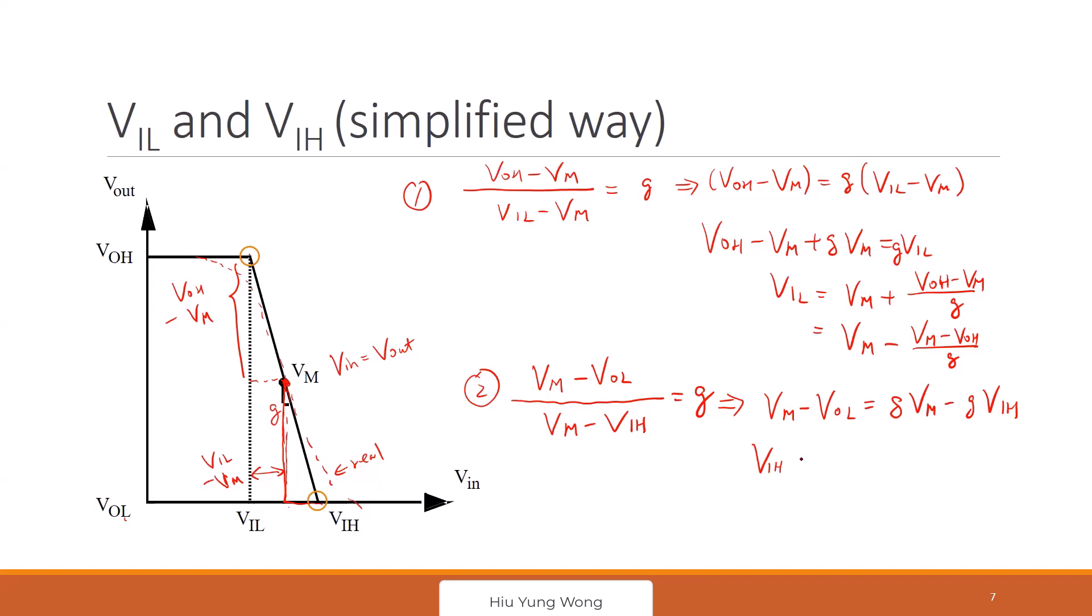So what is VIH? VIH is just multiply G denominator to G, right? And then I move VIH to the left. Then I have G Vm plus Vol minus Vm divided by G, right? So eventually I get Vm minus Vm minus Vol divided by G. Am I right? Yeah.